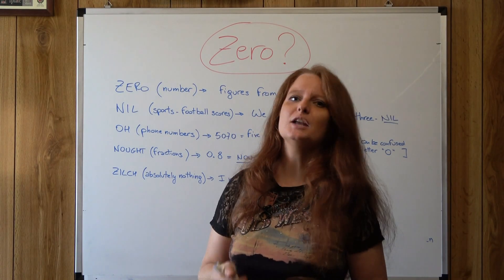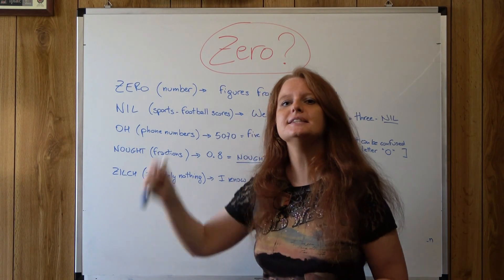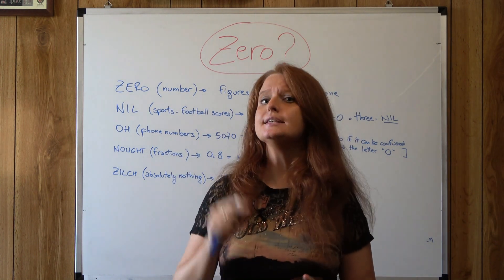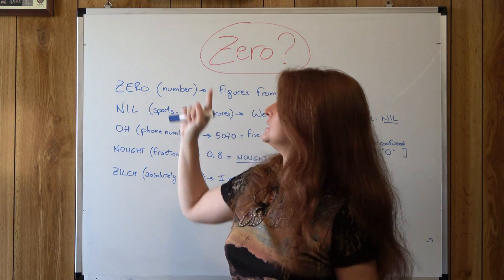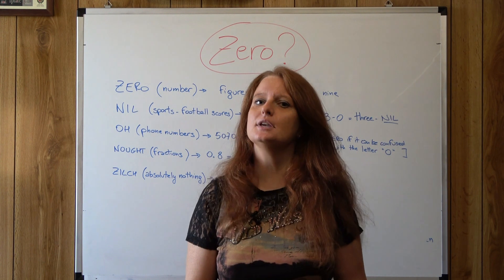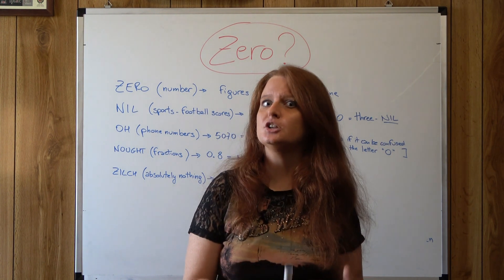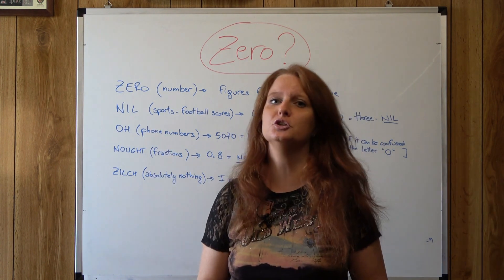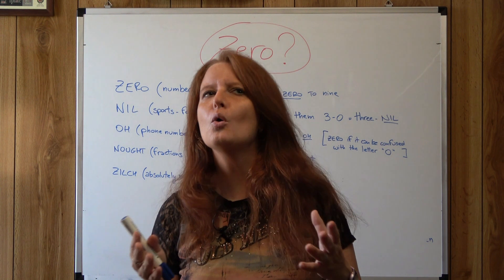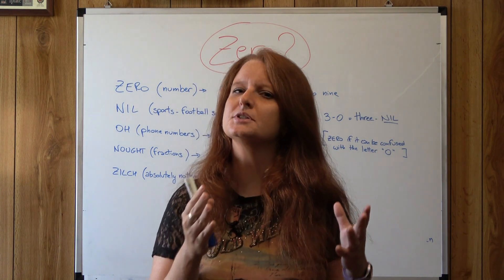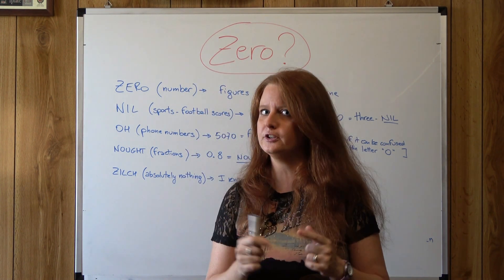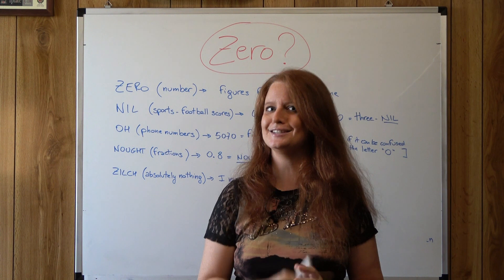How many ways can we use to say zero in English? Is it true that the word 'zero' is especially used in British English while 'O' is especially used in American English? Or maybe there is a specific context when we use one or the other? Let's see it together.